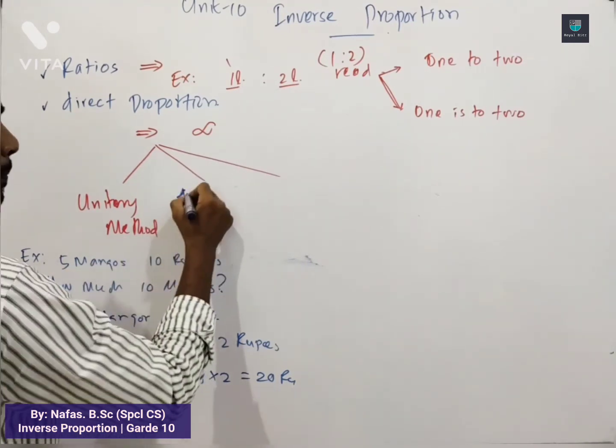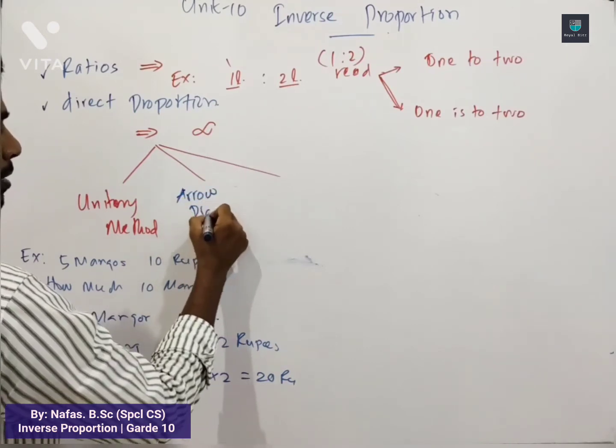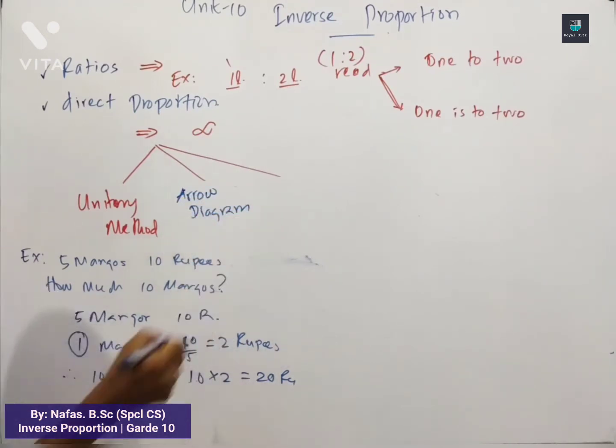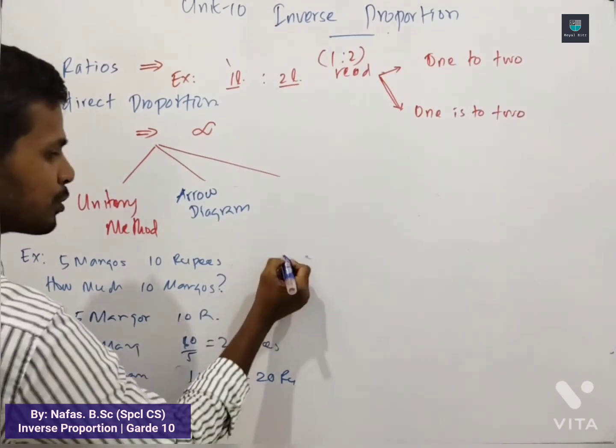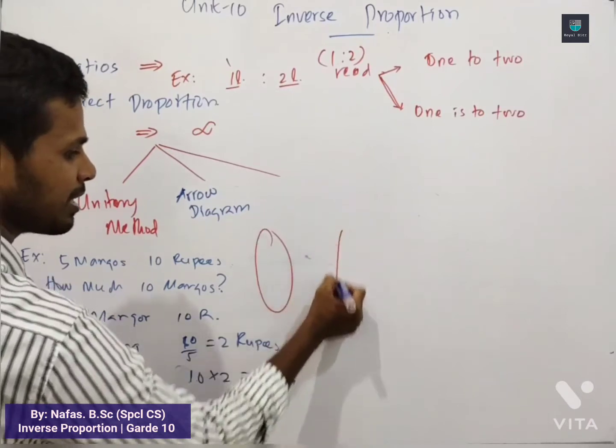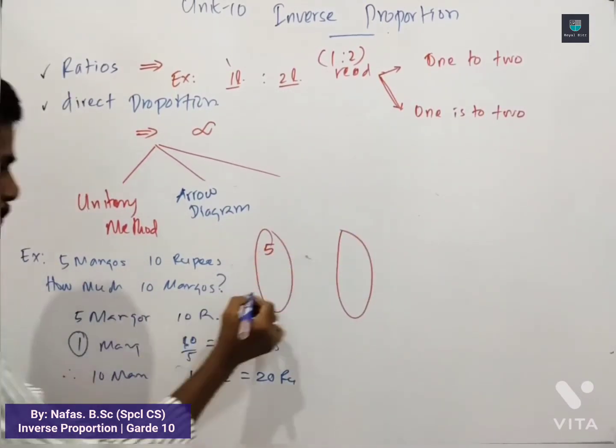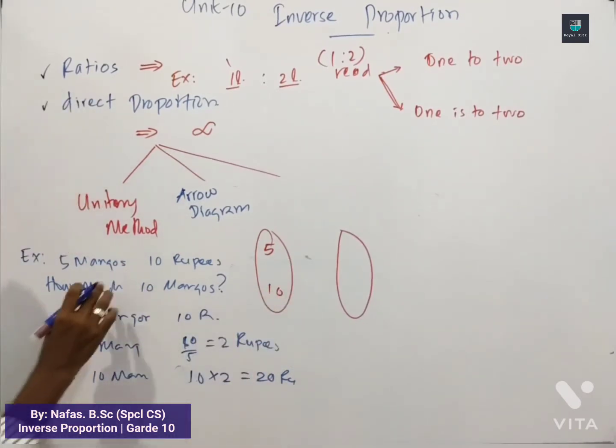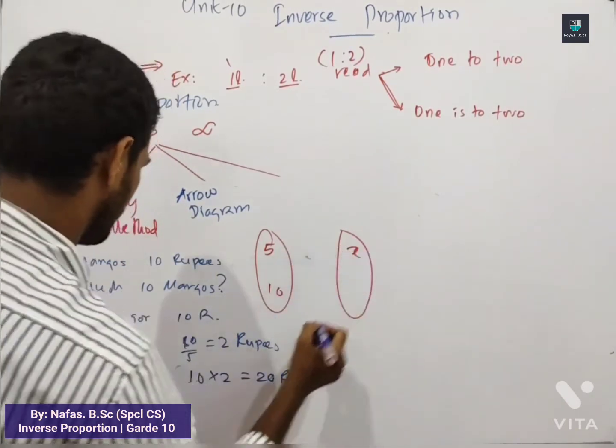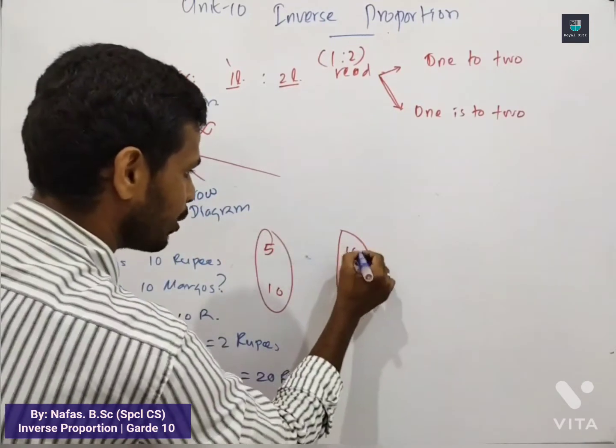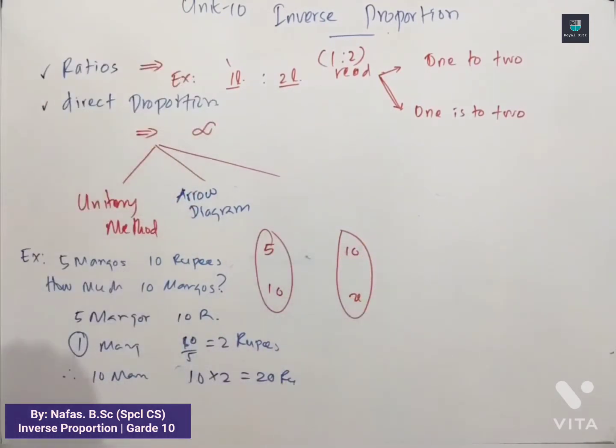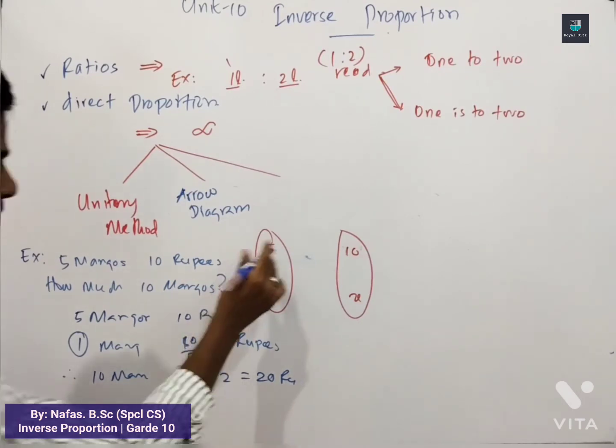Second We Study Arrow Diagram. Remember Arrow Diagram. Second we have Arrow Diagram. What is arrow diagrams? We will do the same question again. Same conditions. Five mangoes Ten rupees. Again, how much, Ten mangoes?